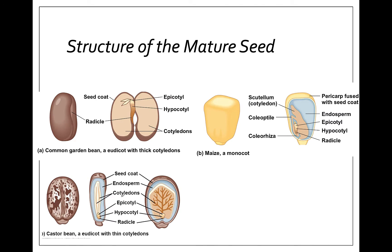Here we have some mature seeds — dicot seeds on the left and monocots on the right. They have some of the same structures, just organized differently. Here we have a common garden bean and a castor bean, where the cotyledons don't swell and the endosperm remains. But in most dicots the cotyledons swell up to fill the entire space and the endosperm is completely absorbed — you can see two cotyledons in each dicot.